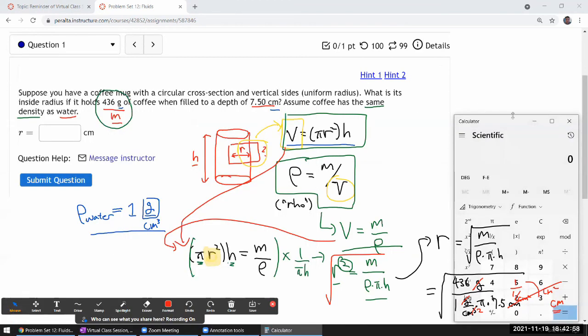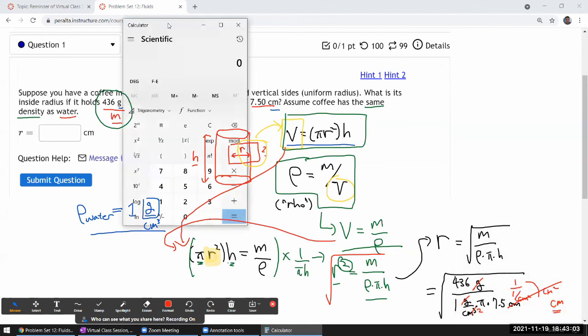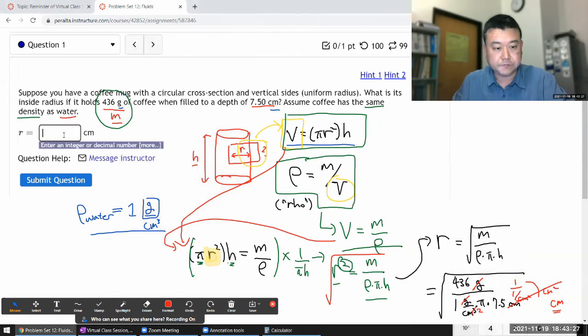So the numbers are, okay, 436 divided by 1, I don't need to write that down, then divided by pi, then divided by 7.5. So I need to take the square root of that. So 4.3 centimeters is the radius of the mug.